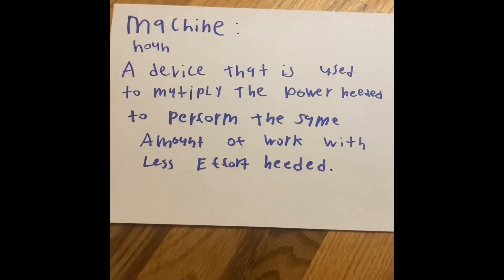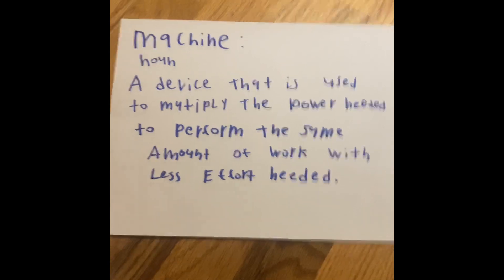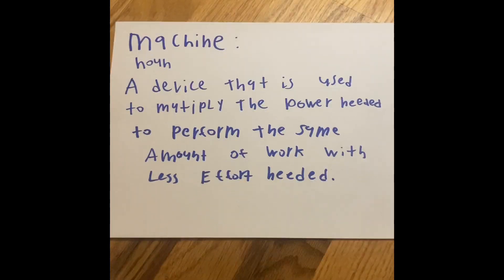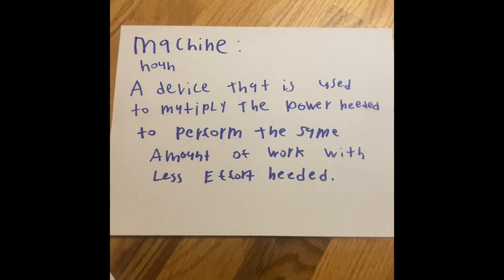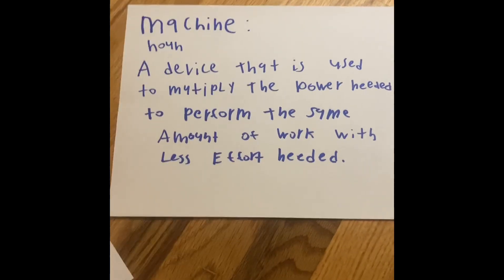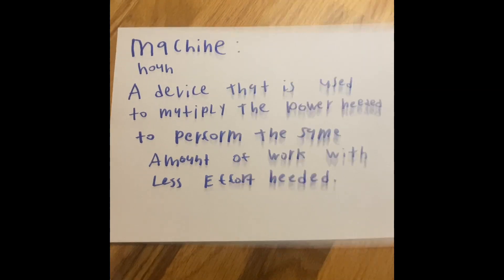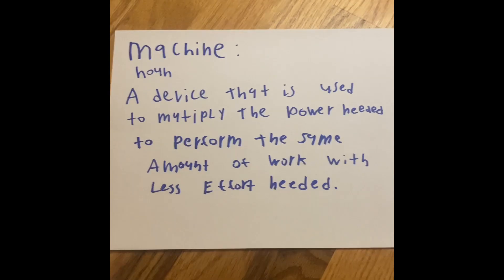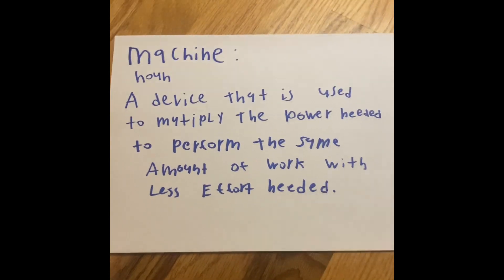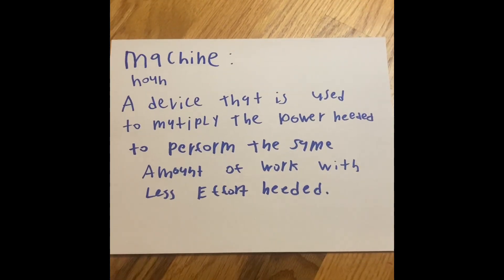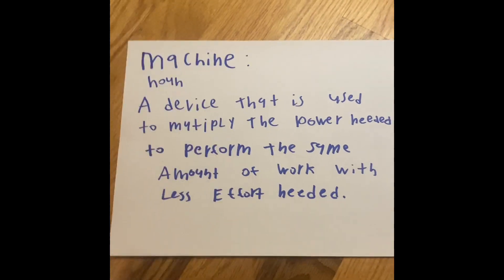So a machine is a noun, and it's a device that is used to multiply the power needed to perform the same amount of work, but with less effort needed. So with machines, we can do and make and perform anything we want to if we put our mind to it. Because a machine can help us perform the same amount of work, but not require a lot of effort needed to do the work.